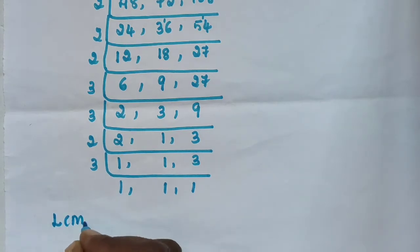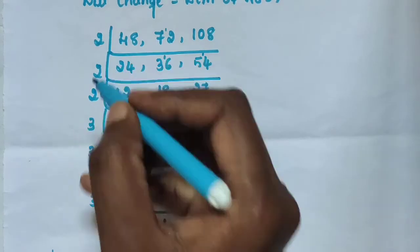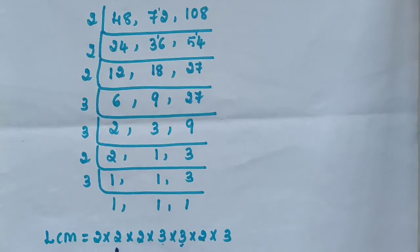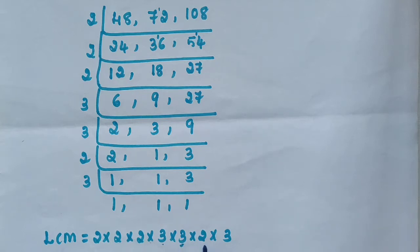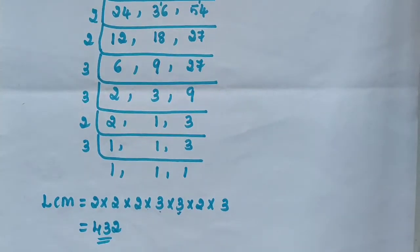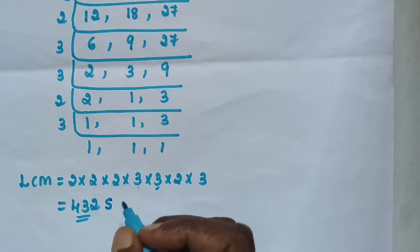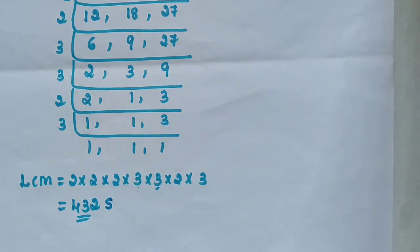Then LCM is equal to 2 × 2 × 2 × 2 × 3 × 3 × 2 × 3. Computing: 2 × 2 = 4, 4 × 2 = 8, 8 × 3 = 24, 24 × 3 = 72, 72 × 2 = 144, 144 × 3 = 432. Then LCM = 432 seconds.